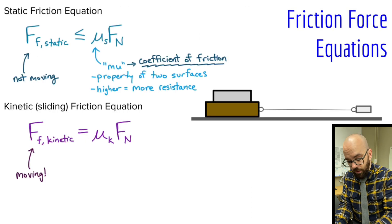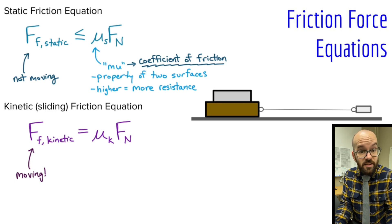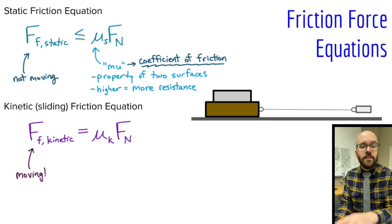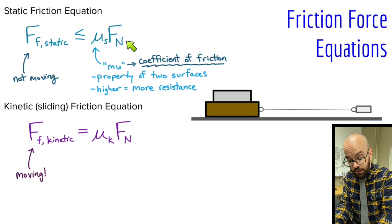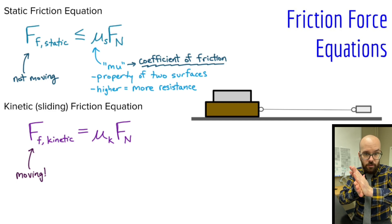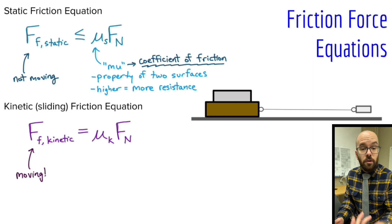We went through the two types of friction. Static friction — that equation tells us the maximum amount of friction we could have before something starts moving. Kinetic friction tells us what friction the object experiences as it is moving. Both equations are very similar — they both have mu, the coefficient of friction, which is a property of the two surfaces rubbing against each other. The other variable that affects friction is the normal force between the two surfaces. The greater the contact force, the greater the friction. If you know mu and the normal force, you can calculate either kinetic friction or maximum static friction.